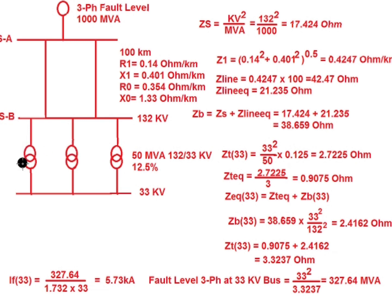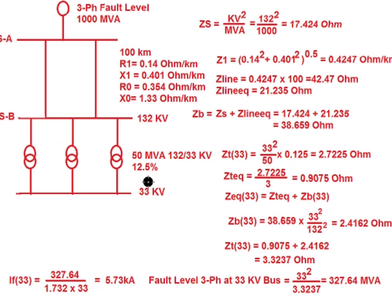For the transformer: three transformers are running in parallel, each with a percentage impedance of 12.5%. The impedance seen at the 33 kV side for each transformer is: ZT33 = kV² / MVA × percentage impedance = 33² / 50 × 0.125 = 2.7225 ohm. Since three transformers are running in parallel, the equivalent transformer impedance is: ZT_equivalent = 2.7225 / 3 = 0.9075 ohm.